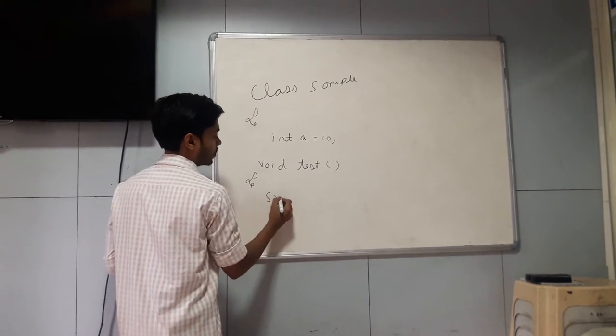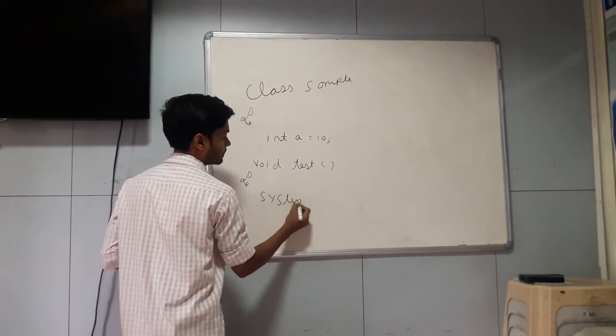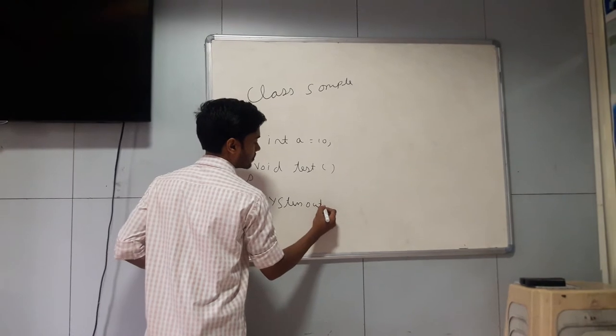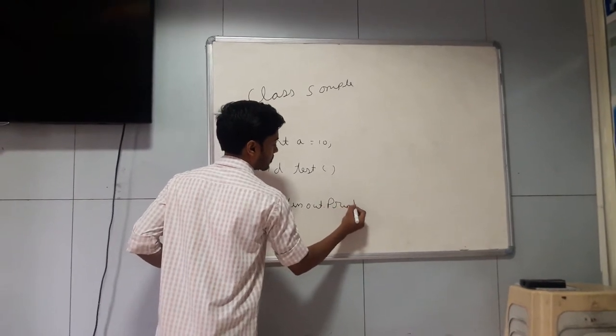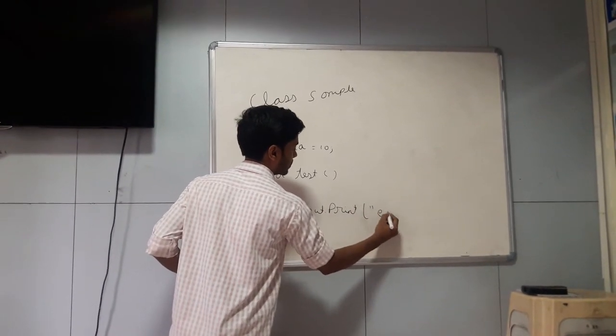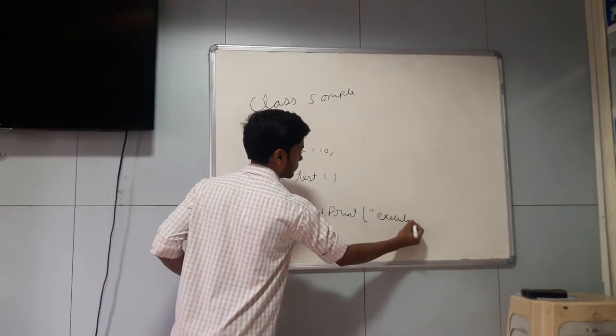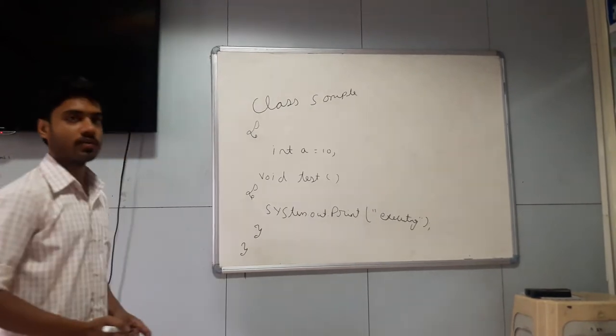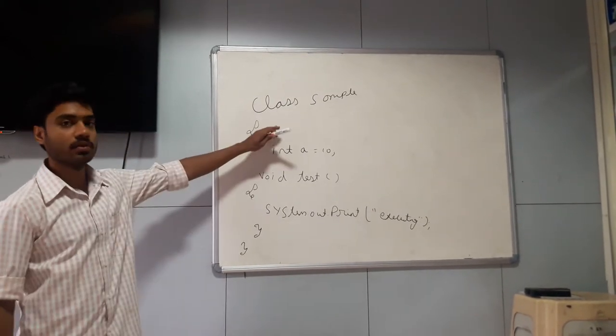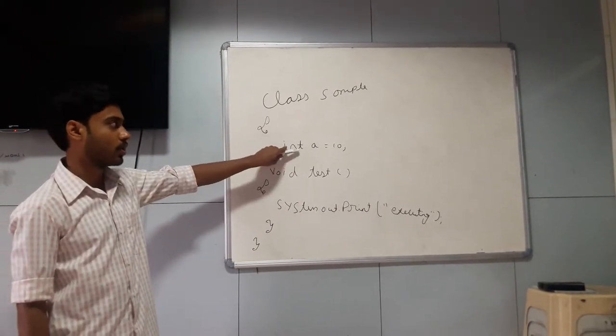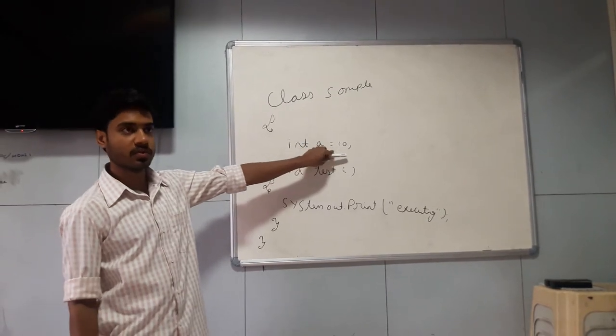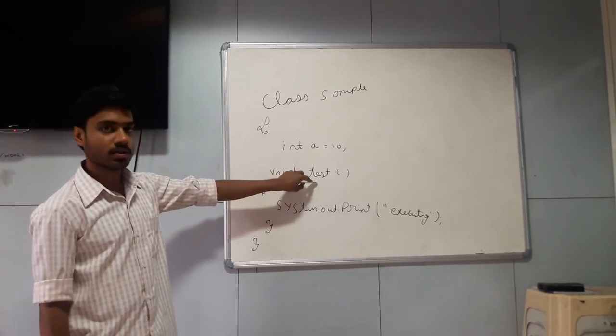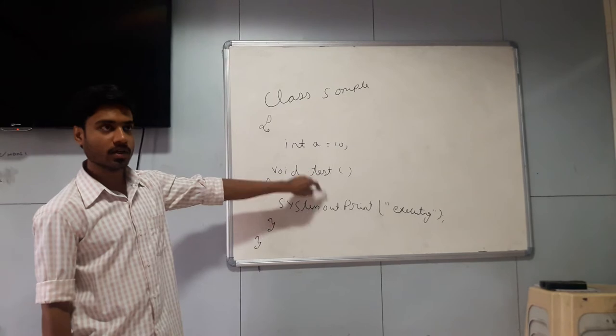Let me have it as void test. And within this, one System.out.println statement. So let me just write one message, executing. So now, here in this case, I have one class by name sample, which consists of two properties. One is int a, the variable int a is equal to 10. And one method void test having some execution over there.